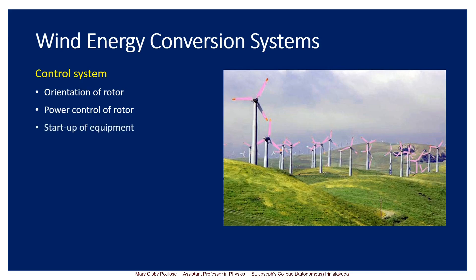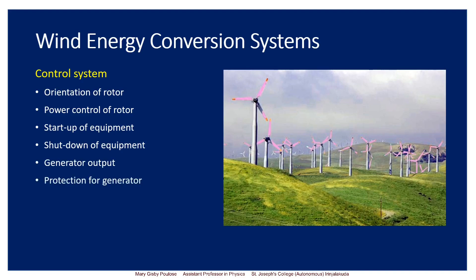The control system manages the start-up of the equipment — the blades initially push and then rotate continuously with the wind. We also need to control the shutdown of the equipment when we need to stop the windmill. Then we need to control the generator output and the electricity, and also provide protection for the generator.